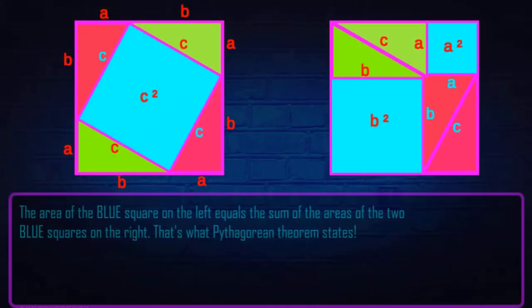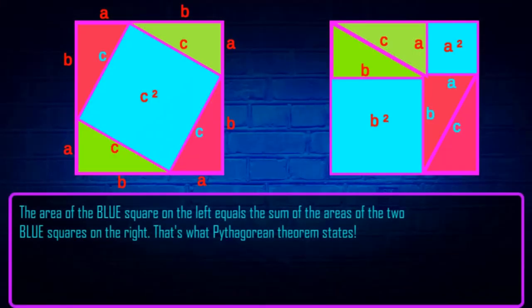The area of the blue square on the left equals the sum of the areas of the two blue squares on the right. That's what the Pythagorean theorem states!